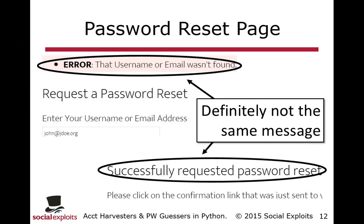One thing I do want to point out: if you're using a password reset page, when you find a valid user ID, that user will be getting a password reset email. You might ask — won't that alert the customer? From a value perspective, we actually want customers to be able to respond to this. I've yet to have it cause a major issue because how many users actually call the help desk to say 'why did I just randomly get this password reset email?' It's surprisingly few. You will be generating a detectable signal, and we'll talk about that in remediation. But it's actually better if we want the customer to catch this.